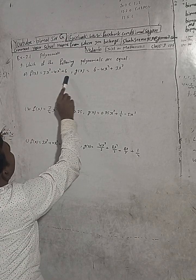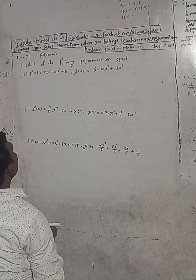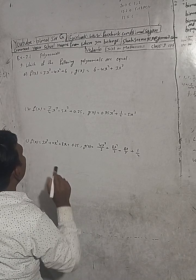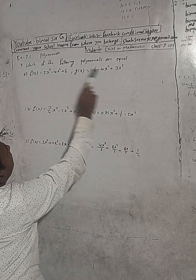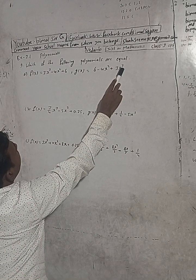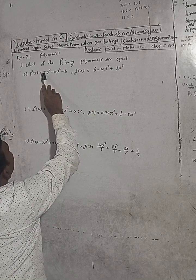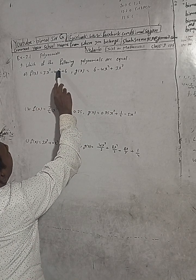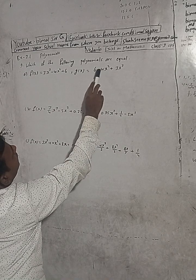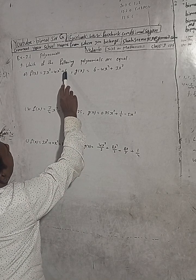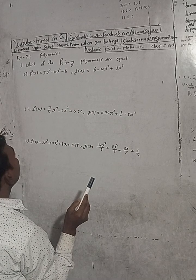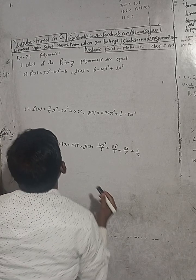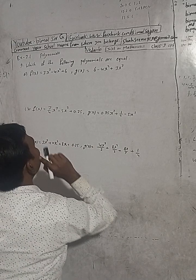So f(x) and g(x) are given. We have to write whether these polynomials are equal or not. We can see this is x³, so the coefficient is +3. After that, x² with coefficient minus 4, and the constant term is 6 in both. So these two are equal polynomials, and we can write here that f(x) and g(x) are equal polynomials.